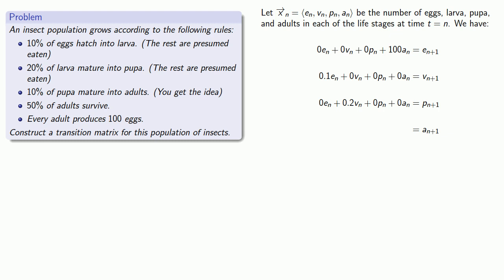And finally, let's take a look at those adults. The adults actually come from two different sources: 10% of the pupae mature into adults, but there's a second source—50% of the existing adults survive. So the number of adults at time n+1 is going to be 10% of the pupae and 50% of the adults. And again, we'll include our other terms using a zero coefficient. And our transition matrix is going to consist of the coefficients of these formulas.